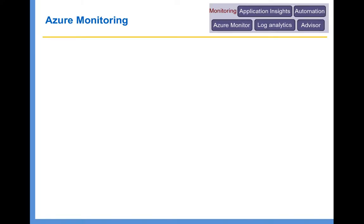Azure monitoring. As you move more and more workloads into the cloud, it is very important that you monitor your Azure resources. For example, you might need to understand the metrics associated with each resource, such as CPU utilization, memory utilization. You also need to monitor activities — for example, who started or stopped the virtual machine — and diagnostic logs such as event logs and IIS logs. Azure provides a number of tools to enable that monitoring.